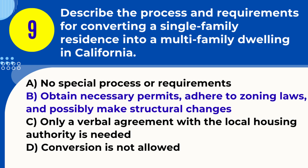Answer: B. Obtain necessary permits, adhere to zoning laws, and possibly make structural changes. Explanation: Converting a single-family residence to a multi-family dwelling in California involves obtaining relevant permits, complying with zoning laws, and making any necessary structural modifications.